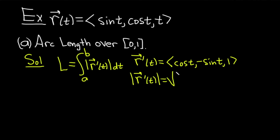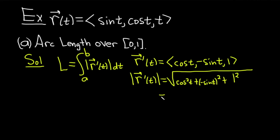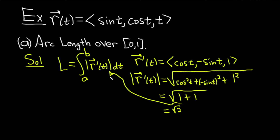To find the magnitude, we square each component and take the square root. So this is the square root of cosine squared t, plus — when we square the negative sine, the negative goes away — plus 1 squared. This equals the square root of sine squared t plus cosine squared t plus 1. Cosine squared plus sine squared equals 1, a very popular identity, plus 1 squared is 1. So 1 plus 1 equals 2, giving us the square root of 2.